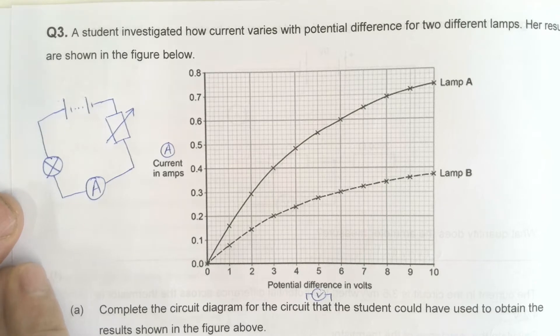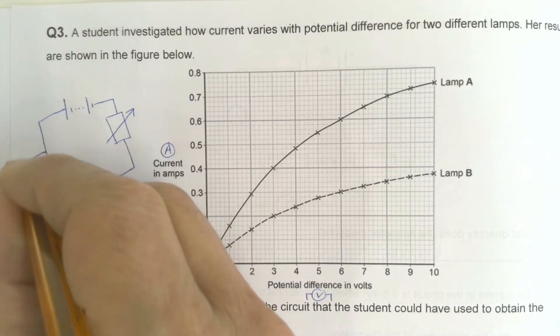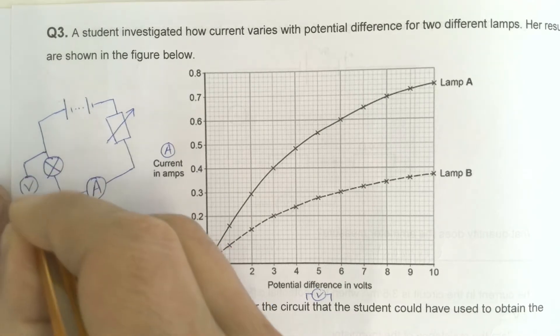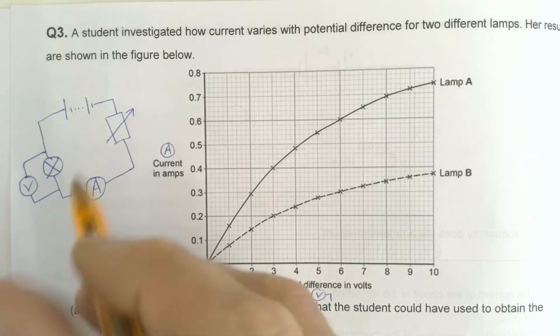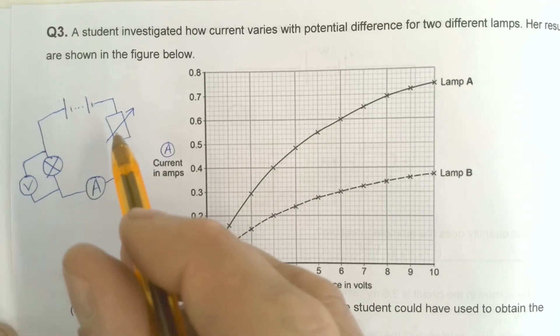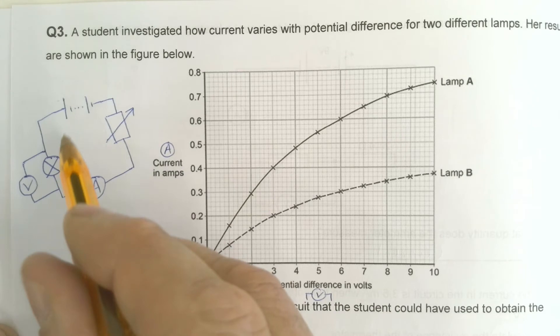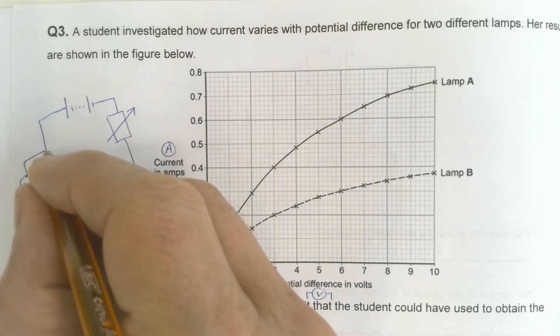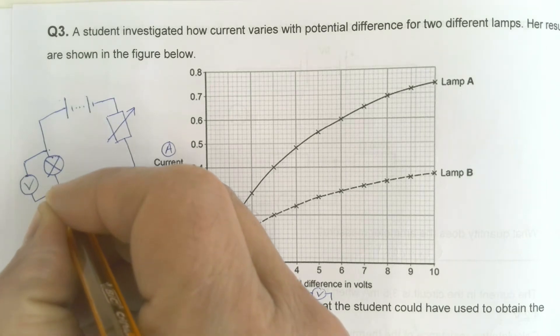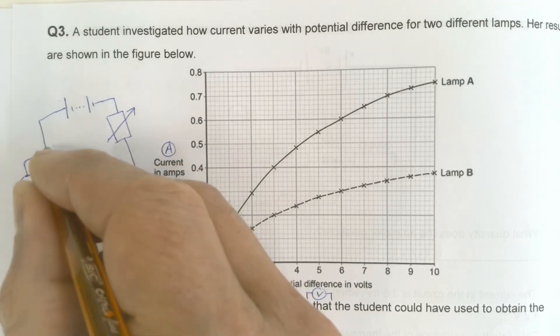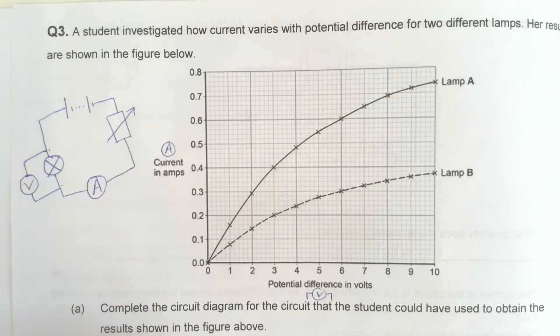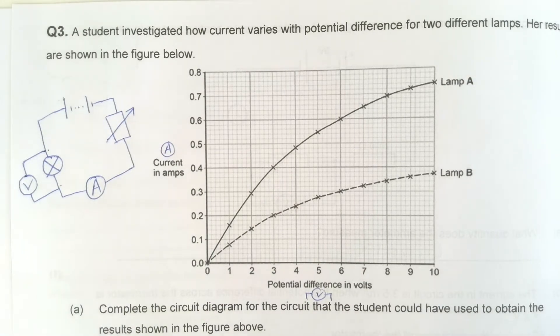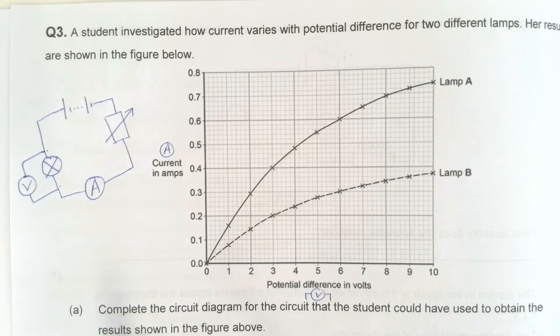So that's my circuit and that would work. However, that wouldn't allow me to calculate the potential difference, so I need to put a voltmeter in there as well. Your circuit can be in any arrangement provided the variable resistor, ammeter, and bulb are all in series with the battery and the voltmeter is across the bulb. It measures the difference in energy of each charge arriving here compared to how much energy it's got when it leaves. The bigger the potential difference, the more energy each one has transferred to the bulb.